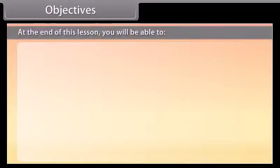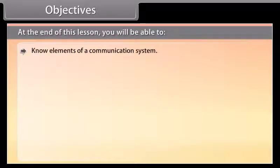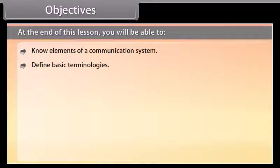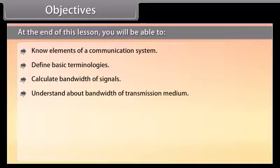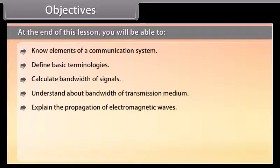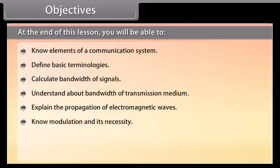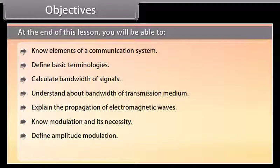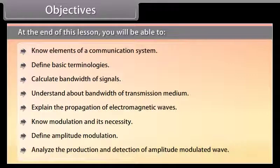At the end of this lesson, you will be able to: know elements of a communication system, define basic terminologies, calculate bandwidths of signals, understand bandwidth of transmission medium, explain propagation of electromagnetic waves, know modulation and its necessity, define amplitude modulation, and analyze the production and detection of an amplitude modulated wave.